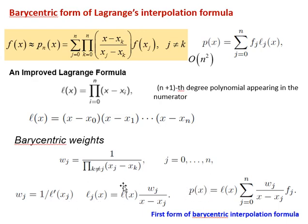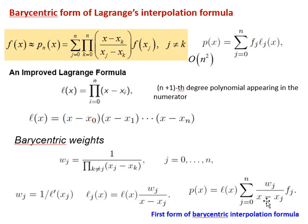We can write the cardinal function L_g(x). Here we can write it as L(x) multiplied by W_g, divided by (x minus x_g), divided by W_g. The Barycentric first form has this formula.